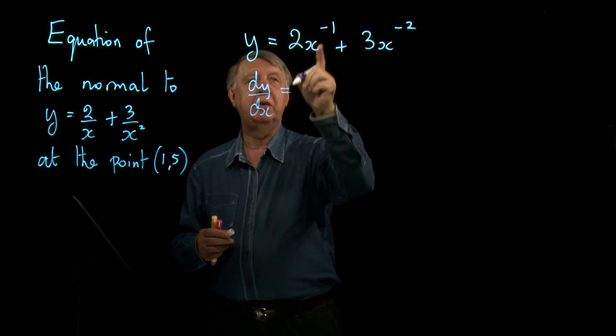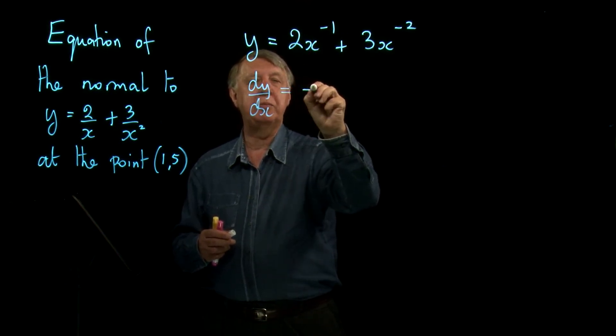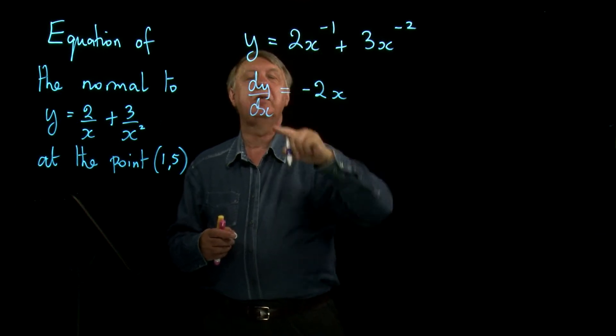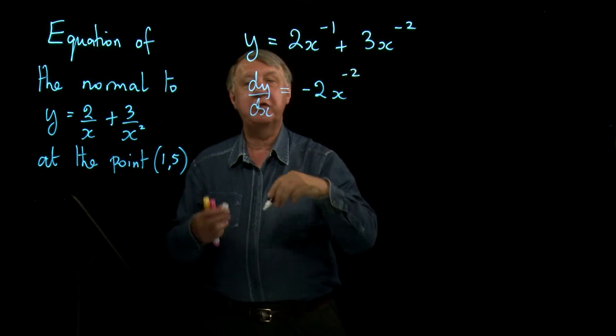Bring down the power, minus 1 times 2 is minus 2. Take away 1 from negative 1 gives you negative 2.